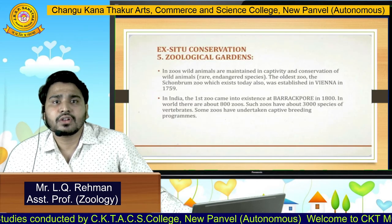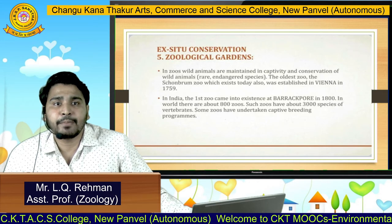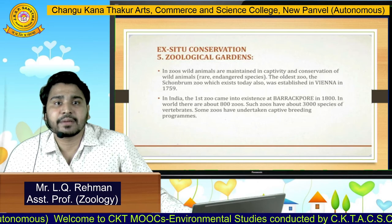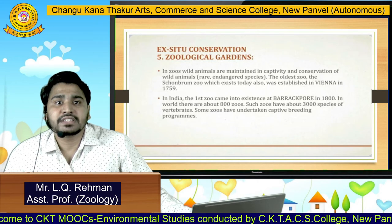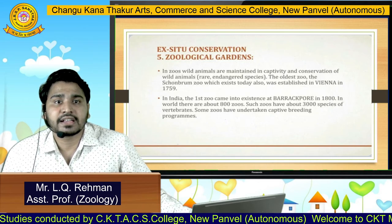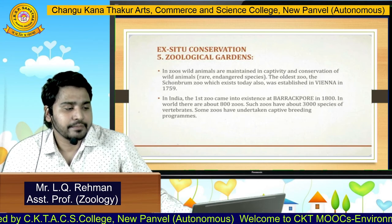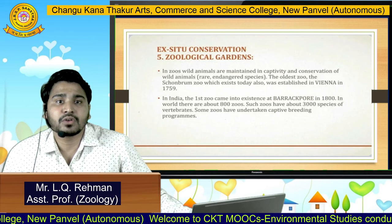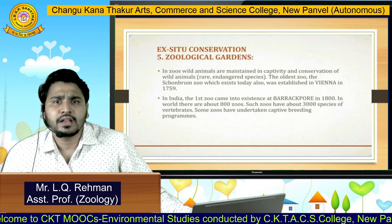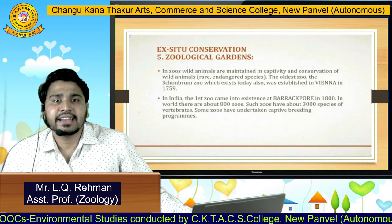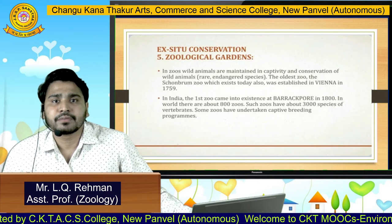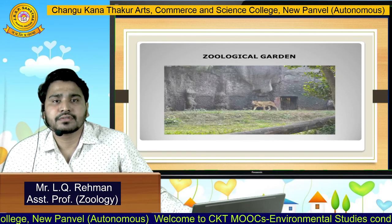The next is zoological gardens, or zoos. In zoos, wild animals are maintained in captivity. Animals that are rare and endangered species are kept here. The oldest zoo, called the Schönbrunn Zoo, which exists today, was established in Vienna in 1755. In India, the first zoo came into existence in Barrackpore in 1800. In the world, there are about 800 zoos, and such zoos have more than 3000 species of vertebrates. Some zoos have also undertaken captive breeding programs. Animals held in captivity tend to live longer because they are given proper care.